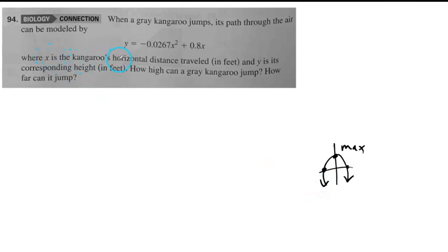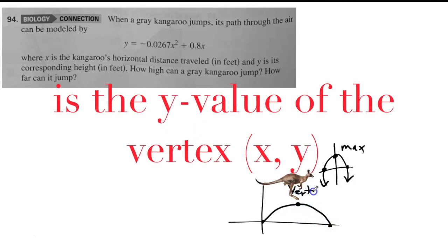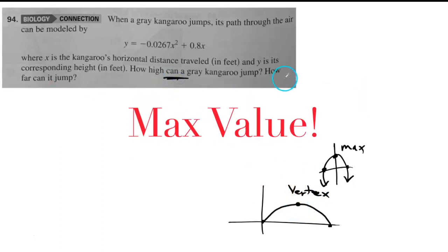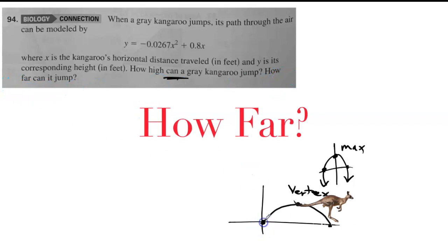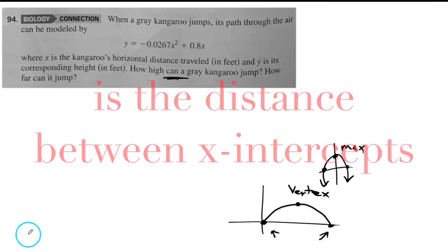So x is the kangaroo's horizontal distance, y is the height. How high? If my kangaroo is jumping, they're saying how high? How high will be my vertex. My vertex will give me my maximum value. How far? Now, how far is the horizontal distance? Therefore, I've got to find my x-intercepts. Let's do the how high first. The equation is negative 0.0267x squared plus 0.8x. To find the vertex, this is in standard form.